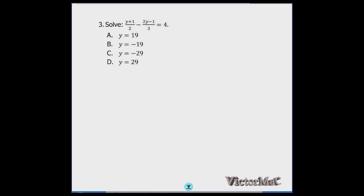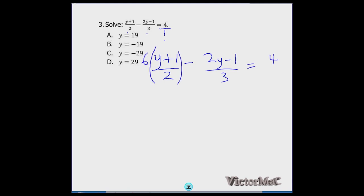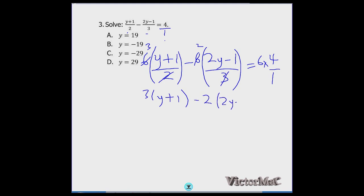Number three is on algebraic equations — solve for the unknown y. First, look at the denominators: 2, 3, 2, 3, and 1. The LCM of 2, 3, and 1 is 6. Multiply all terms by 6: the first gives 3 into (y + 1), the second gives minus 2 into (2y − 1), and the right-hand side gives 24.